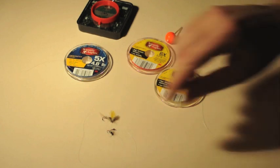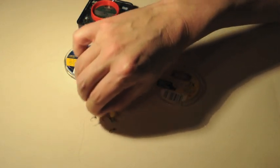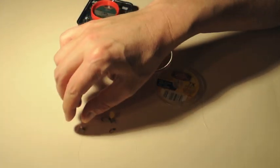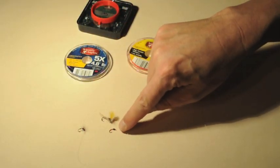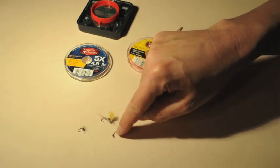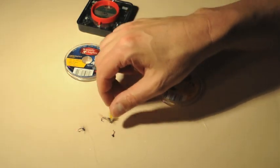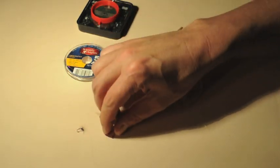There are all kinds of debates about how much tippet should be between that dry fly and another tiny dry fly, another midge, and how much should be between the dry fly and the midge larva or pupa.